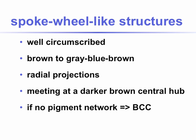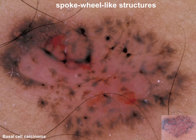Spoke-wheel-like structures are well-circumscribed, brown to gray-blue-brown. They're radial projections that meet at the darker brown central hub. And again, if there's no argument for a melanocytic lesion — for example, aggregated globules or pigment network — this criterion is very suggestive of a pigmented basal cell carcinoma.